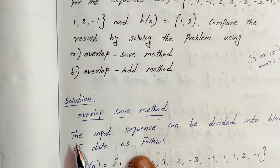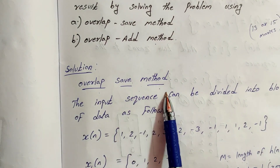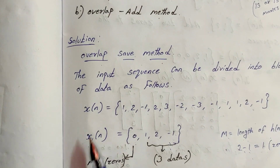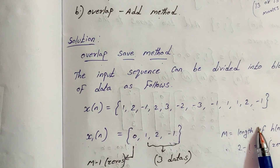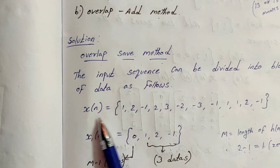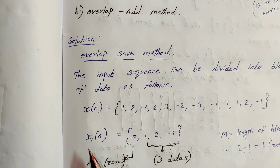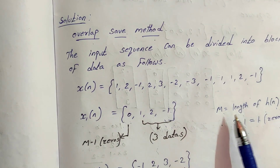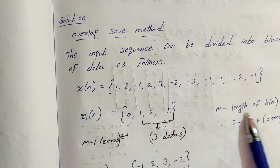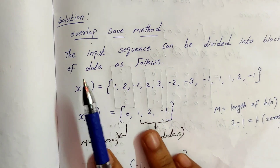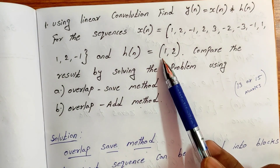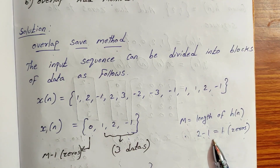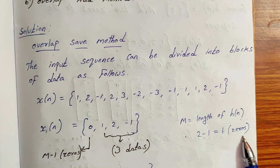We need to talk about the overlap save method. We need to divide x[n]. x1[n] — we need to talk about M, which is the length of h[n]. h[n] is equal to {1, 2}, so there are two values. M minus 1 equals 1, so we need to add one zero. So x1[n] starts with {1, 0}.